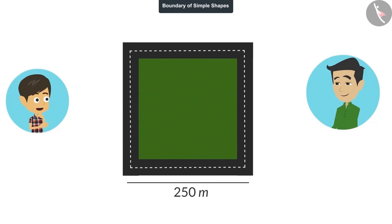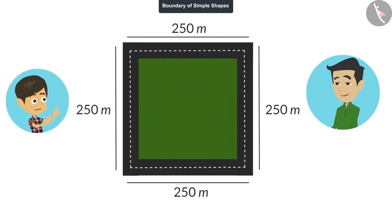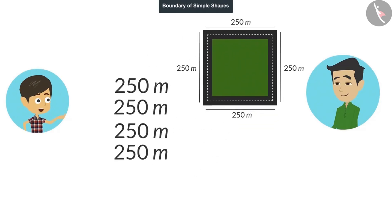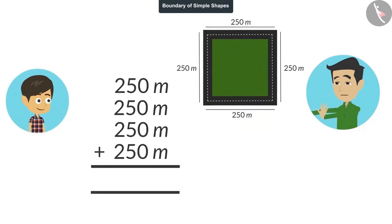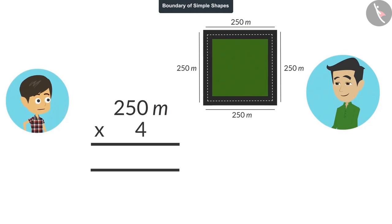You mean I have to find the length of this boundary? Yes. Okay, I will try. Papa, it is a square shape, so all its sides will be 250 meters each. Now we add these 4 sides. Wait, Reyanj — instead of adding the same number 4 times, it is better to multiply this number by 4. Oh yes, I didn't think of that. Now we can find the length of this boundary by multiplying the length of an edge by 4.